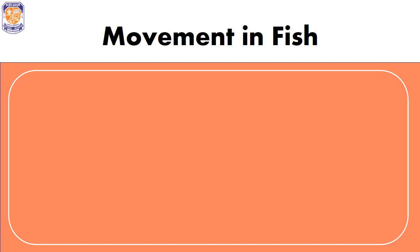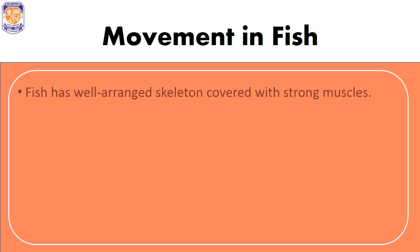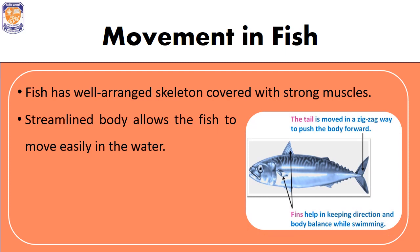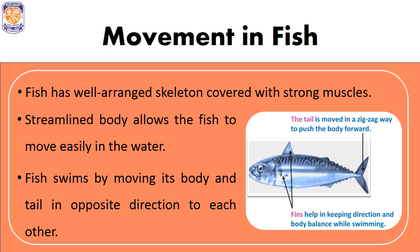Movement in fish: Fish are vertebrates, meaning they have backbones inside their body. They are aquatic animals living in water. Fish have a well-arranged skeletal system covered with very strong muscles. The streamlined body of the fish allows it to move easily inside water.